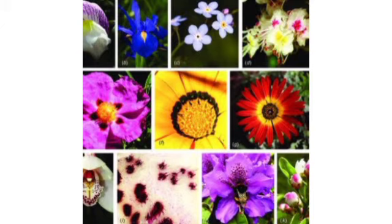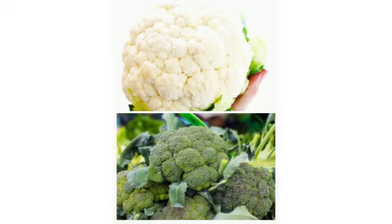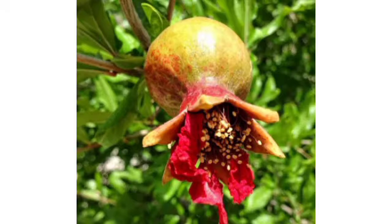Buds grow into flowers. Flowers are bright in color and have a sweet smell, which attracts birds and insects. Flowers of some plants such as cauliflower and broccoli store food in them, just like leaves, stem and roots. Most flowers become fruits after some time.